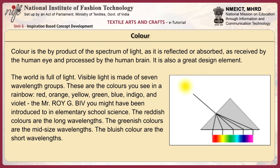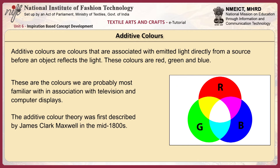The reddish colors are the long wavelengths, the greenish colors are the mid-size wavelengths, and the bluish colors are the short wavelengths. Additive colors are colors associated with emitted light directly from a source before an object reflects the light. These colors are red, green and blue — the colors most familiar in association with television and computer displays. The additive color theory was first described by James Clark Maxwell in the mid-1800s.